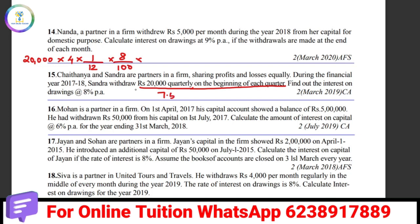At the end of the quarter, the average period is 4.5. At the beginning of the quarter, the average period is 7.5. So the average period we use is 7.5.